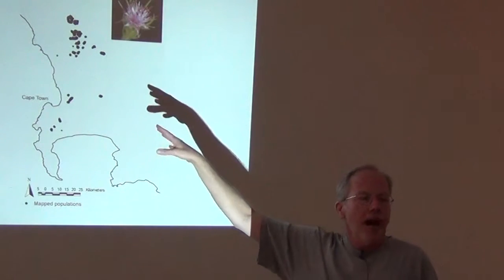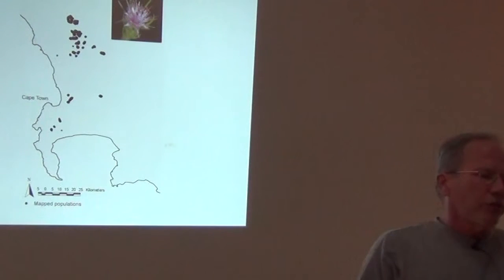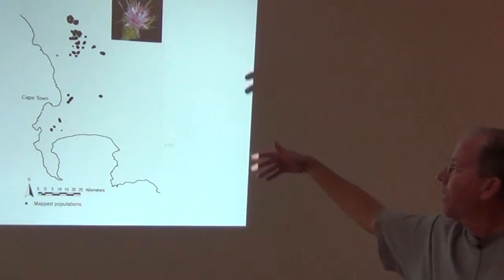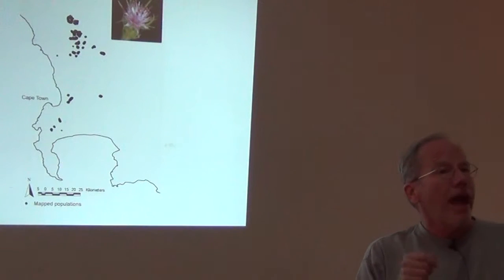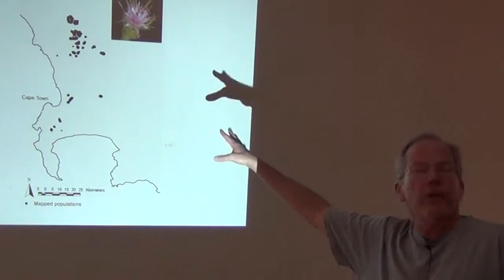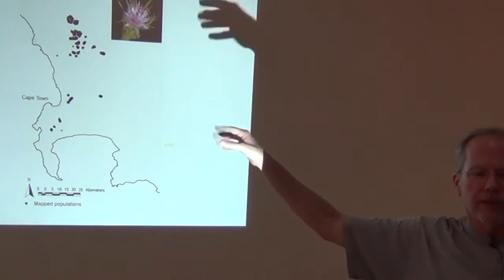And the black dots are records from the protea atlas, which is this atlas of occurrences of these protea species. So weekend hikers and botanists have been out and they've either had a GPS or they've been on a trail that had been GPS registered. And they've marked down where they observed the proteas on this trail that has known GPS points for it, which lets us have pretty accurate records of where the proteas are.